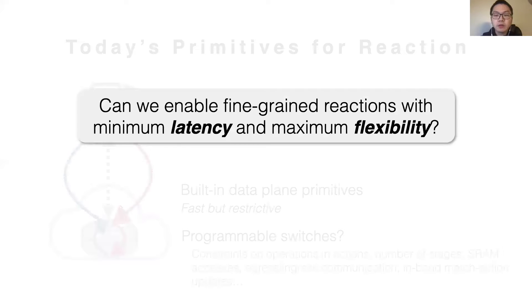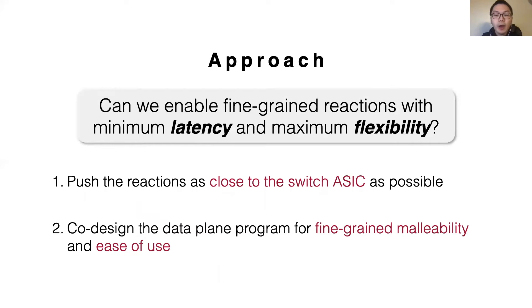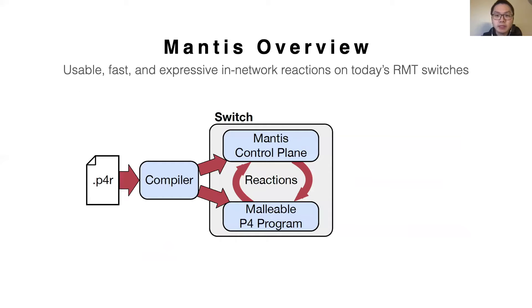In this work, we explore the question: can we enable in-line reactions to both capture microseconds-level events and provide utmost flexibility for encoding the control logic? Our approach is to push the reaction loop as close to the switch ASIC as possible, meanwhile co-design the data plane program for fine-grained malleability and ease of use. Hence, we present Mantis, a framework for encoding usable, fine-grained, and expressive in-line reactions on today's RMT switches.